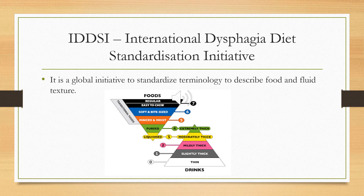Next, the IDDSI — the International Dysphagia Diet Standardisation Initiative — is a global initiative to standardize terminology to describe food and fluid texture. If you were to go on holidays and have dysphagia, you could go into any healthcare system and say 'I'm on level two drinks and level six foods' and that healthcare practitioner would understand and be able to provide the same as you have at home. We used to call modified foods and fluids grades, but now they're all called levels. We go from level zero to four on drinks, and from level seven down to level three on foods.